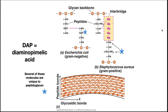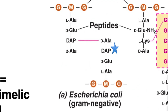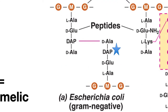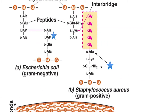Peptidoglycan is different in various species. In gram-negative bacteria, there is a direct link between the peptides. In gram-positive bacteria, there is an amino acid inner bridge. For example, in Staphylococcus aureus, the inner bridge is made up of glycines. Note that the amino acids in the inner bridge are slightly different between the two species.